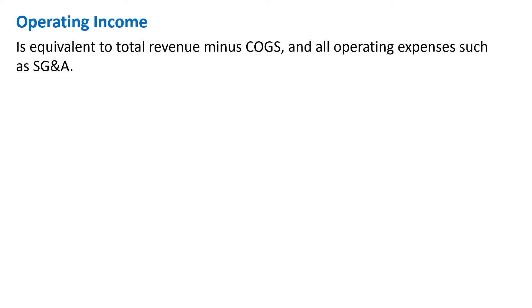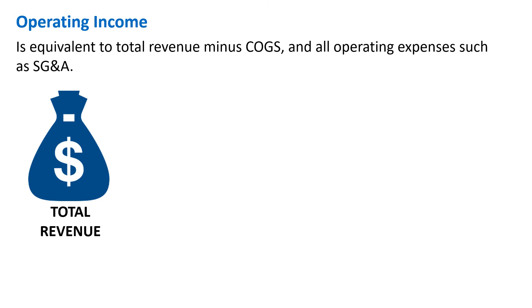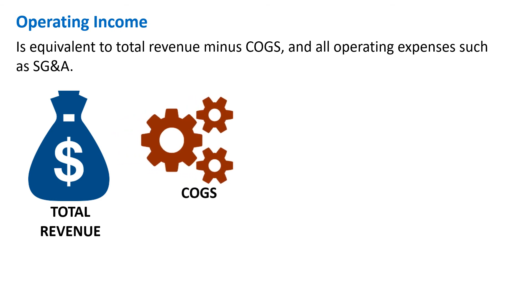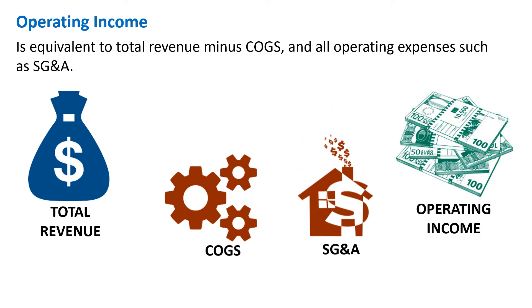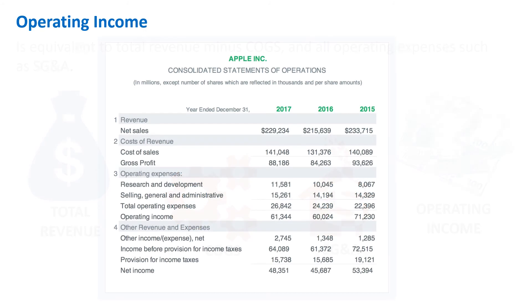Now let's look at the next topic: operating income. Operating income equals total revenue minus COGS and all operating expenses such as SG&A. The formula is: take total revenue, remove the COGS, remove the SG&A, and what you're left with is operating income. This profit and loss statement will better illustrate what operating income is — don't get overwhelmed by all the numbers, as we'll cover each in detail in the next video.